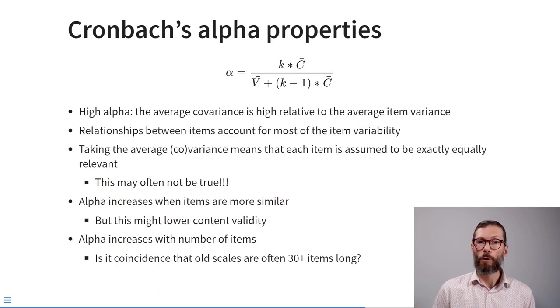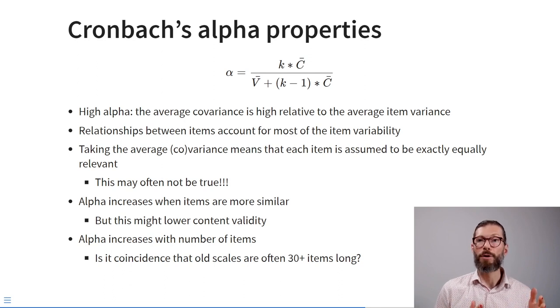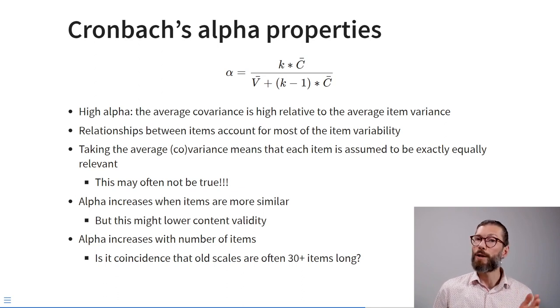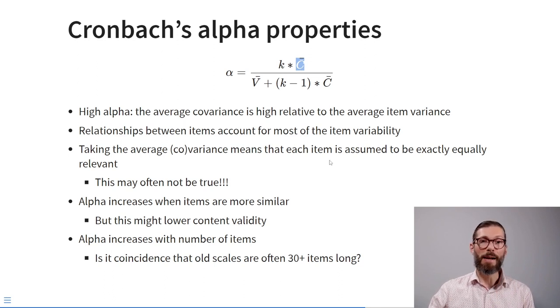Cronbach's alpha has several properties. A high alpha means the average covariance between items is high relative to average item variance, and that item relationships account for most of the item variability — in other words, error variance is low. Importantly, because we use average covariance, we assume each item is exactly equally relevant for the underlying scale score, which may not always be the case.